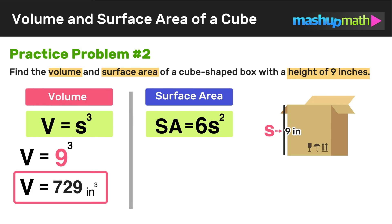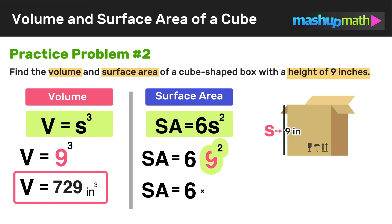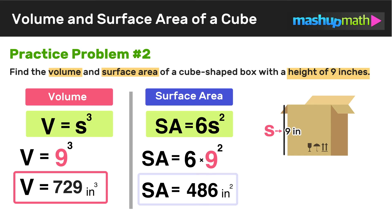Now we find the surface area of the box. Surface area equals 6s squared, and s equals 9, so surface area equals 6 times 9 squared. 9 squared equals 81, so the surface area equals 6 times 81, which is 486. The surface area of the box is 486 square inches. And that's all there really is to finding the volume and surface area of a cube — if you understand the formulas, it's pretty straightforward.